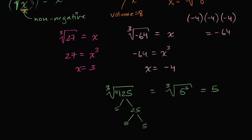For much larger numbers, there's no very simple way to compute a cube root, fourth root, or fifth root — and even square roots can get quite difficult. There's no straightforward method the way you might multiply or divide numbers.